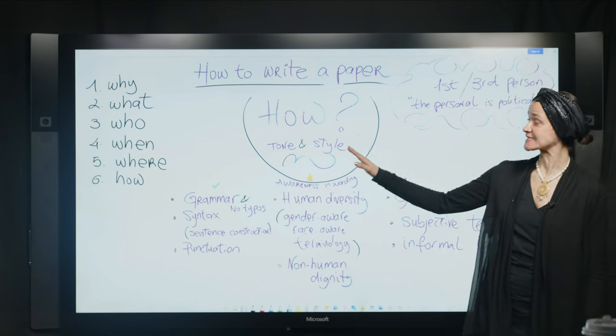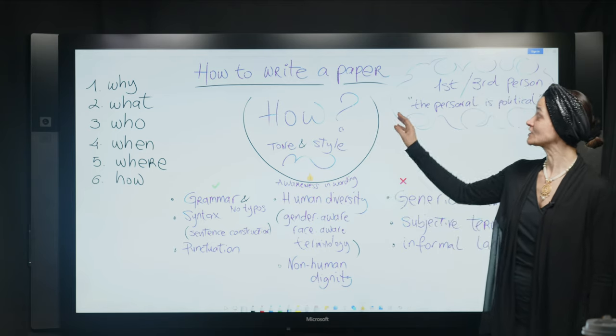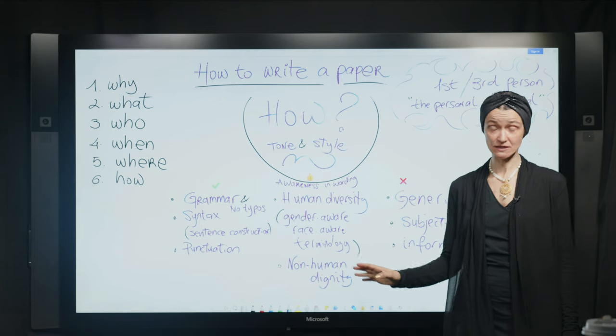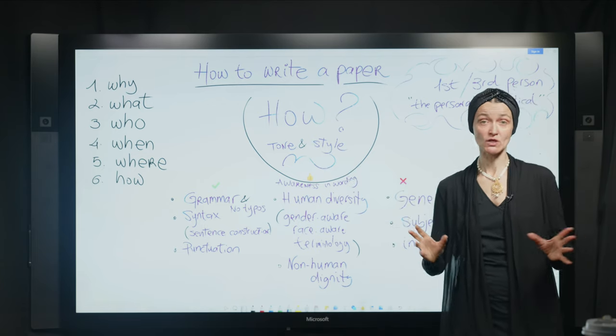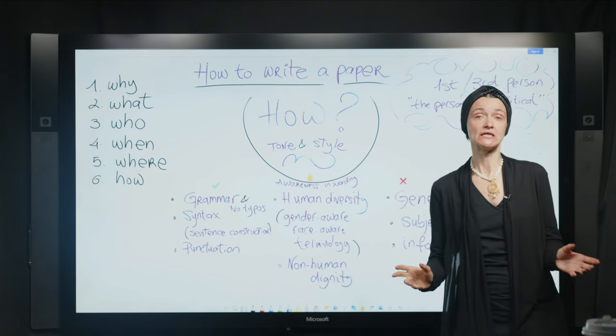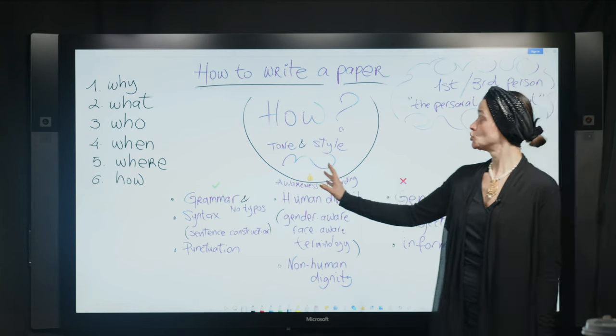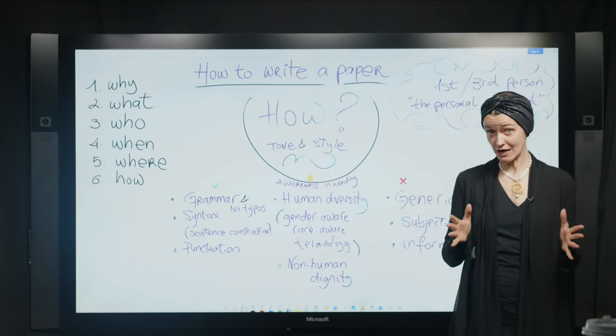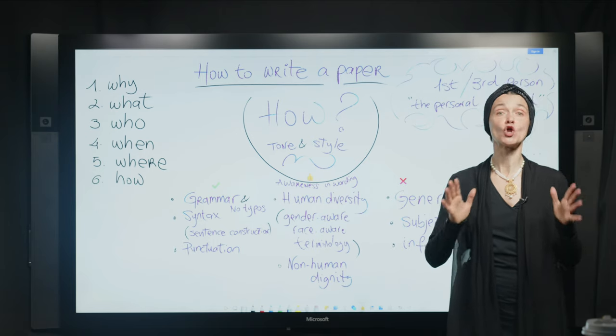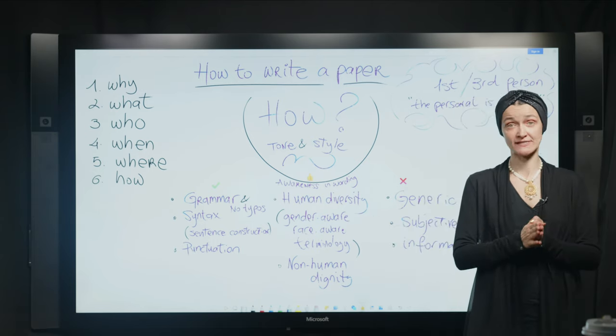In the sixth and last video of this mini course, we are addressing how to write it, specifically the tone and style of a good paper within academic parameters. The first thing I want to say is that you really want to make sure your paper has no grammar mistakes and no typos. Why is that? I'm going to give you a very clear example.